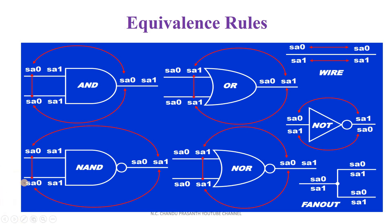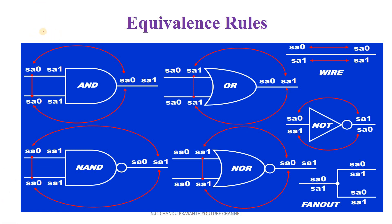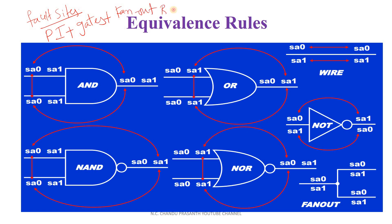So for any Boolean gate circuit, we have a formula to find the fault sites. The formula is: Primary Inputs plus Number of Gates plus Fanout Branches. This is a standard formula in order to find out the fault sites in a Boolean gate circuit.